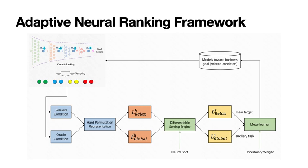To address these challenges, we propose the Adaptive Neural Ranking Framework. We decompose the problem into a joint optimization of two sub-objectives, corresponding to the relaxed condition and the oracle condition, and hope to find the optimal gradient direction by a multi-task meta learner. For optimizing the sub-targets, we use permutation metrics to reformulate the targets, and borrow the differentiable sorting technique to achieve more appropriate end-to-end learning.